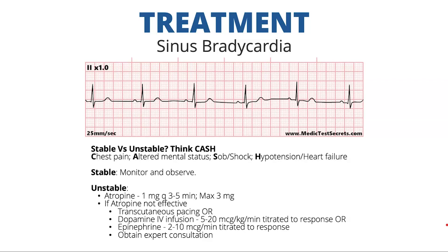For an unstable patient, we can do atropine one milligram every three to five minutes with a max of three milligrams. If atropine is not effective, we can consider transcutaneous pacing or a dopamine infusion, five to 20 micrograms per kilogram per minute titrated to response, or epinephrine two to ten micrograms per minute. If we exhaust those resources, we can obtain expert consultation. Note that atropine used to be 0.5 mg and the dopamine dose used to be two to 20 — the new ACLS guidelines are one milligram and five to 20 micrograms per kilogram per minute.